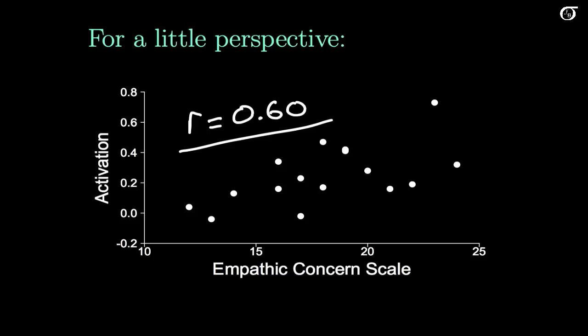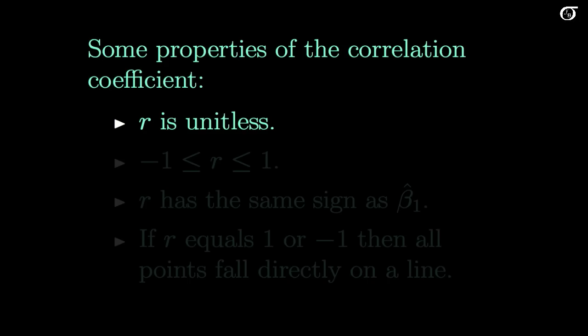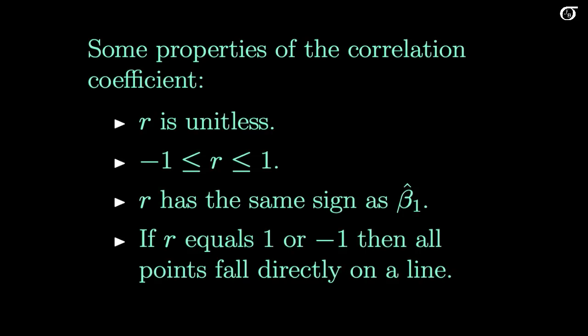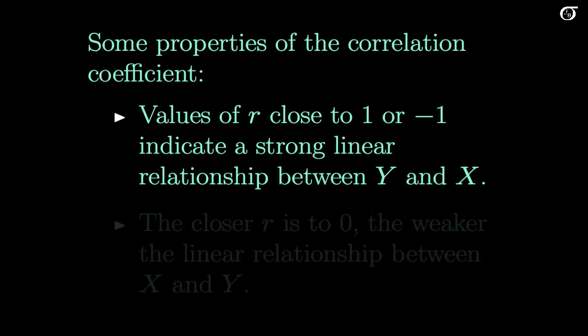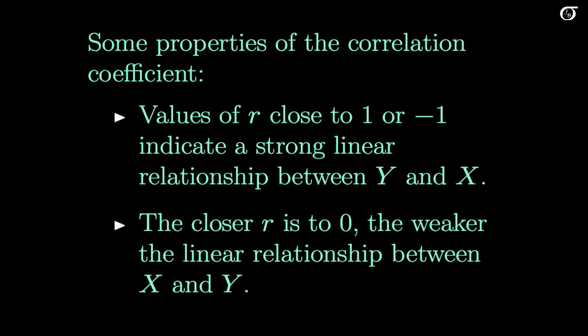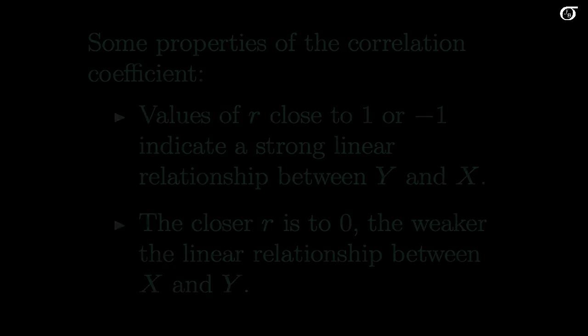Let's look at a few properties. R is a unitless quantity. It has to lie between minus 1 and 1. It has the same sign as the sample slope. If R equals 1 or minus 1, then all points fall perfectly on a line. If the value of R is close to minus 1 or 1, then there is a strong linear relationship between X and Y. If R is close to 0, then there's a weak linear relationship.